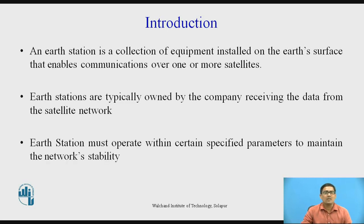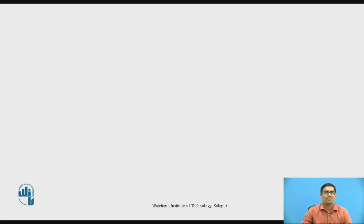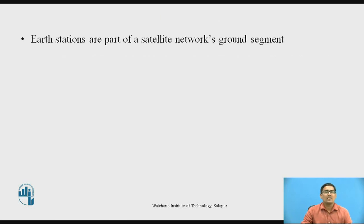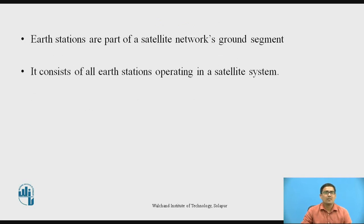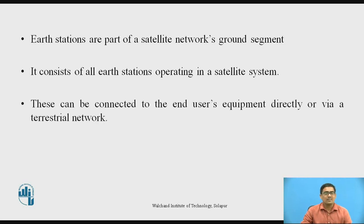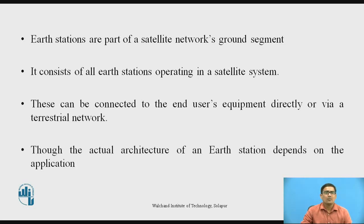Earth Station must operate within certain specified parameters to maintain the network's stability. Earth Stations are a part of a satellite network's ground segment. It consists of all Earth Stations operating in a satellite system. This can be connected to the end user's equipment directly or via a terrestrial network.